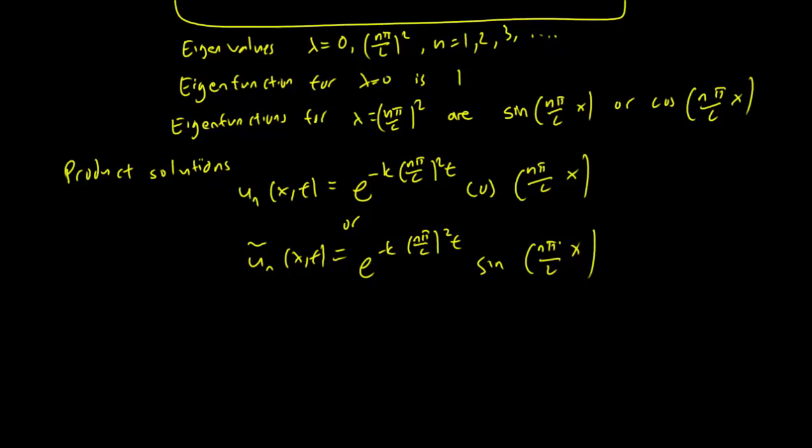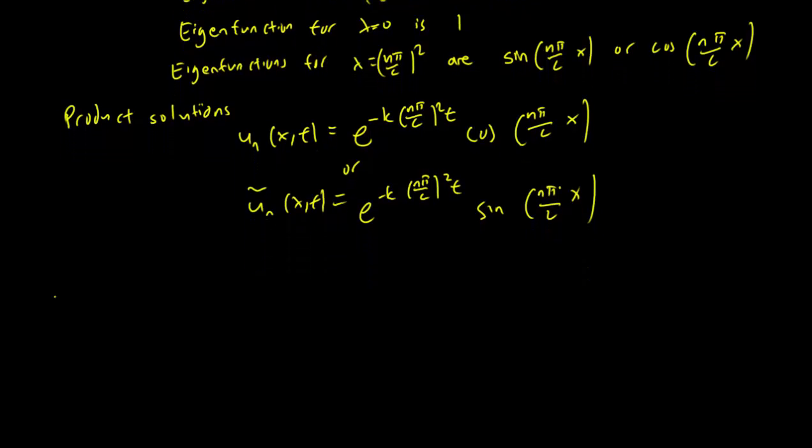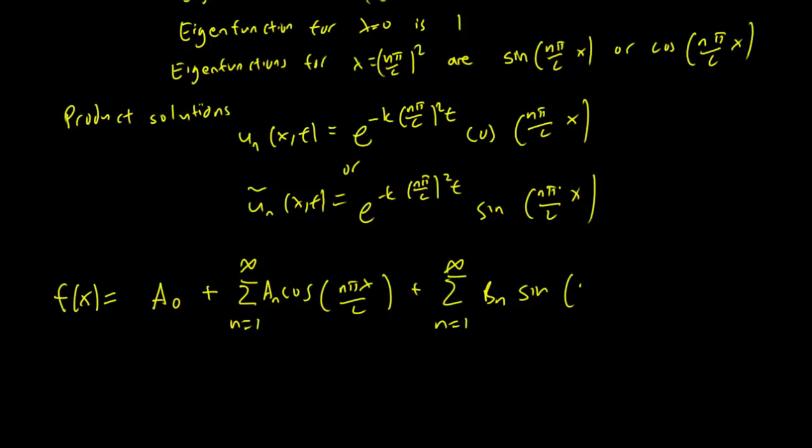And this means that we need to write down our f(x) in this form. f(x) is going to be A₀ plus sum from n=1 to infinity of A_n times cosine(nπx/L) plus sum of n=1 to infinity B_n sine(nπx/L).